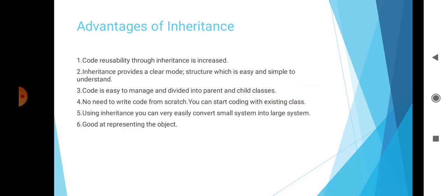Advantages of inheritance include: increased code reusability; clear model structures that are easy to understand; easy code management divided into parent and child classes; no need to write code from scratch as you can start with existing classes; and using inheritance, you can easily convert small systems into large systems and better represent objects.